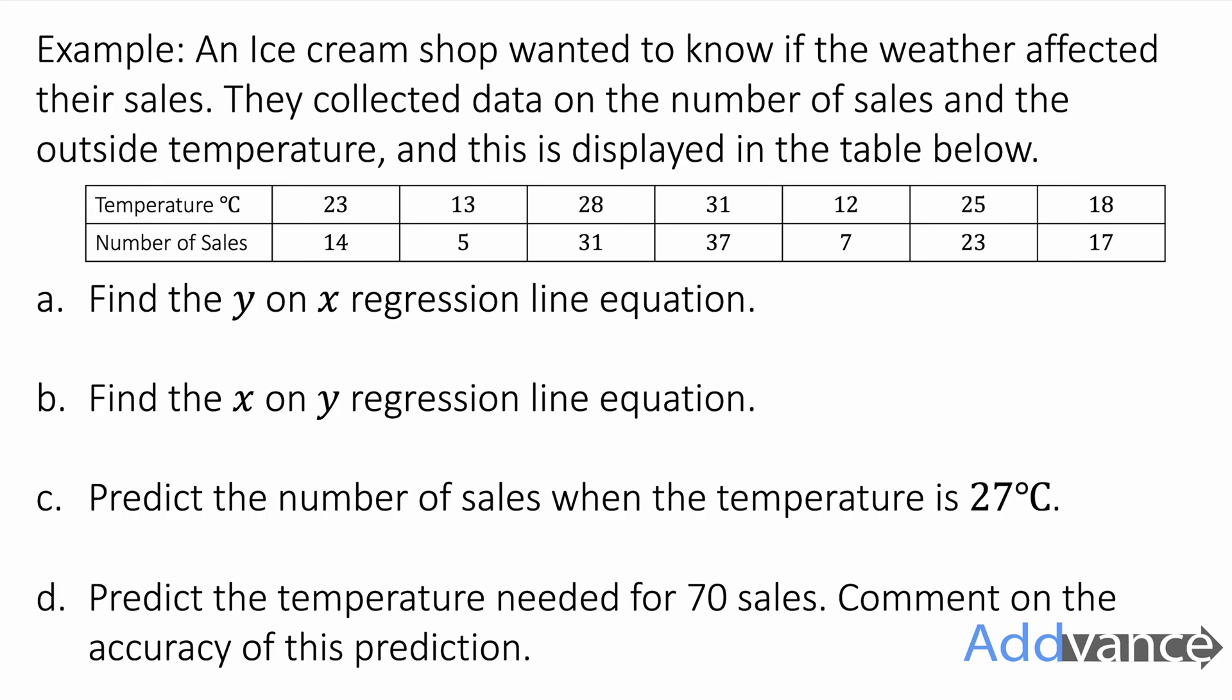Now the independent variable here is the temperature whereas the dependent variable which we are measuring is the number of sales. So the independent variable, the temperature, is the x value and the number of sales is the y value.